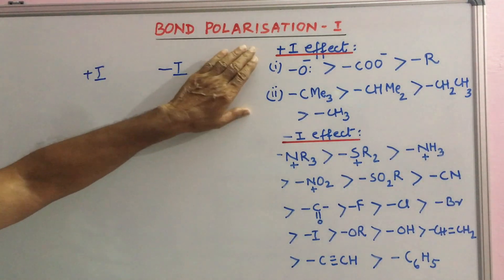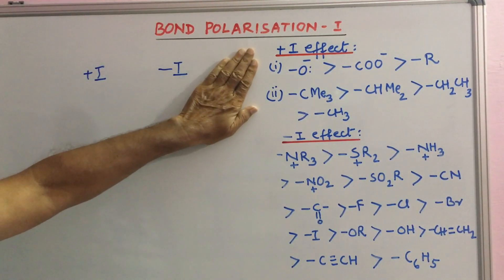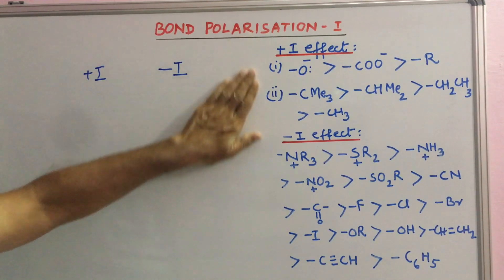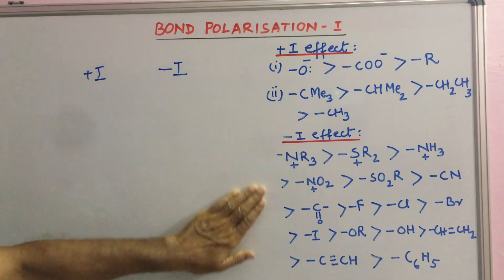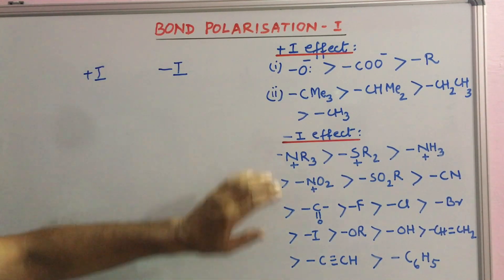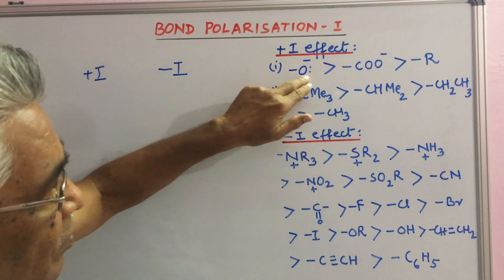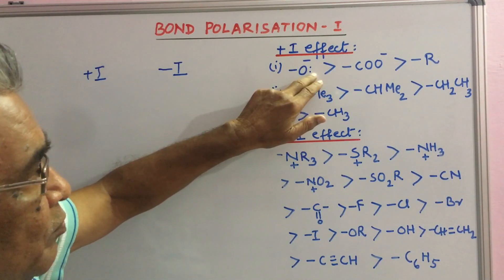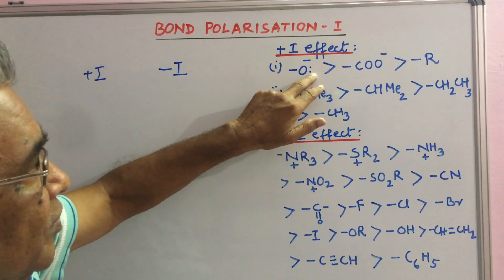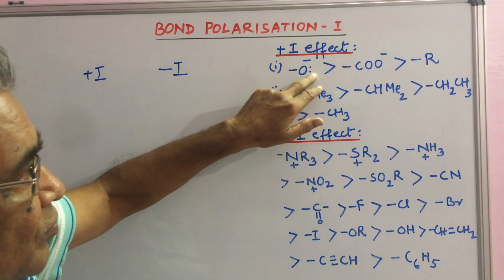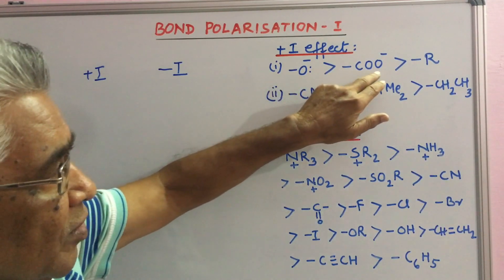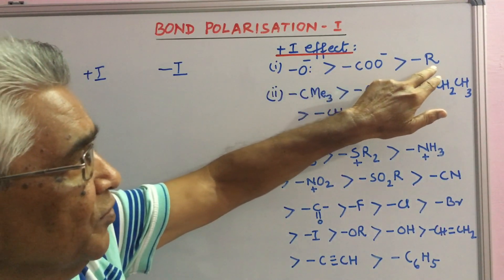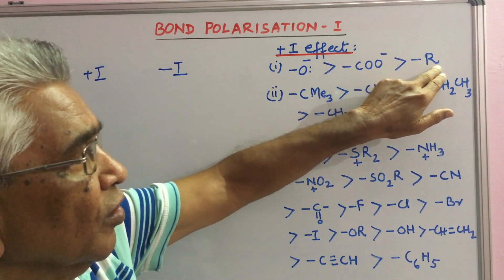I made a list here. Oxygen with a negative charge has a strong plus I effect sending away electron density from itself. Then carboxylate ion, and then comes alkyl group R.